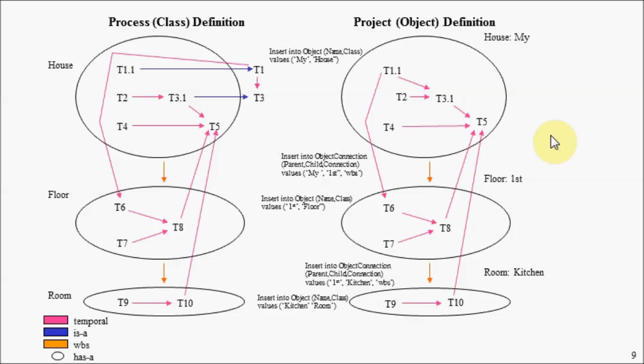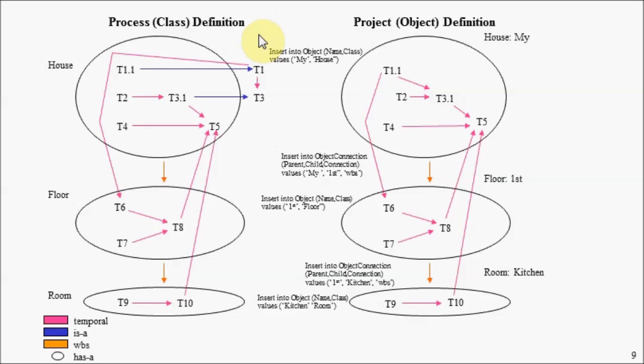Now look what we have accomplished here. In a mere five insert statements into appropriate tables, we've instantiated a project — we've instantiated our process definition. We've, in fact, introduced a new paradigm: a very powerful way of defining and instantiating a project plan.